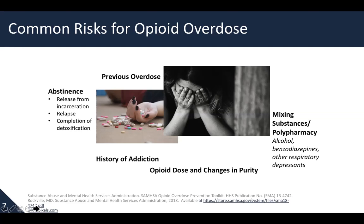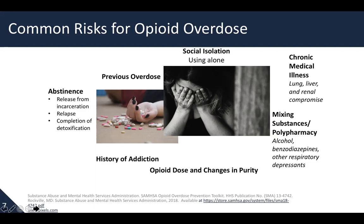Mixing substances or polypharmacy — combining opioids with alcohol, benzodiazepines, or any other medications that could cause respiratory depression — are very important risk factors. Any patient with a chronic medical illness such as COPD, asthma, or obstructive sleep apnea is at high risk, and anyone with hepatic or renal compromise is also at risk because that is how opioids are eliminated from the body and with any compromise they may accumulate. Using alone or being socially isolated is a very high risk factor because there is no one there to call for help.